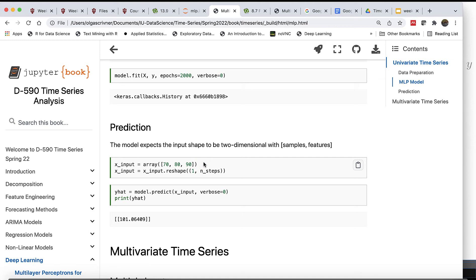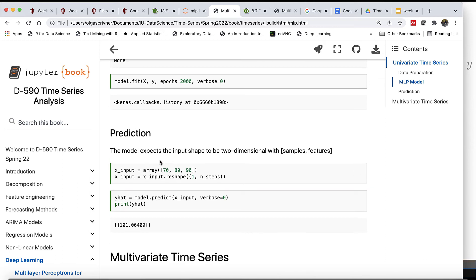Then finally we can fit our model to our features and output and specify number of iterations. To predict with the model now that we trained it, we need to specify input, but we need to put the input into the shape that our model will accept, which is two-dimensional where we have sample and features. If our input is three elements, let's say 70, 80, 90, and we would like to predict the next value, we need to reshape it into a two-dimensional matrix. Then we can apply the predict function to our input and we can print our predicted value, which in this case is 101, pretty close.